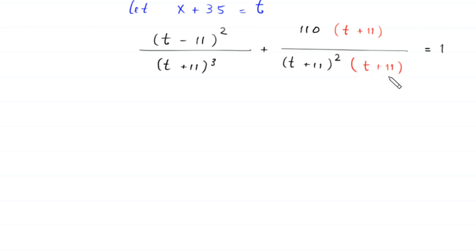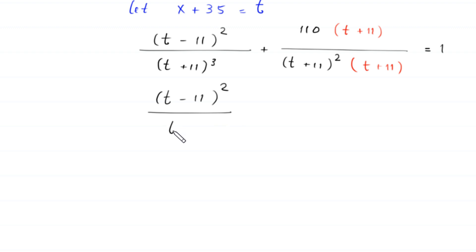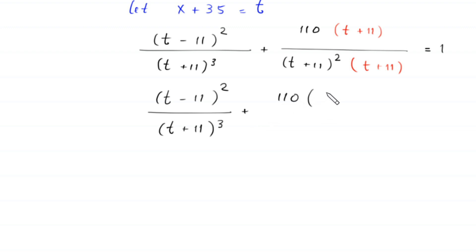We multiply and divide by t plus 11. So this will become t minus 11 whole squared divided by t plus 11 whole cubed, plus 110 times t plus 11, divided by t plus 11 whole cubed, plus 110 times t plus 11 whole squared, is equal to 1.